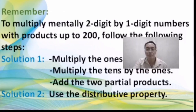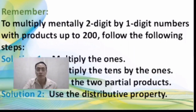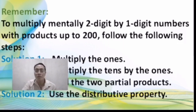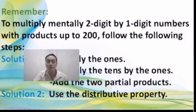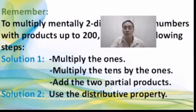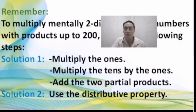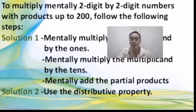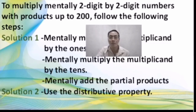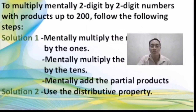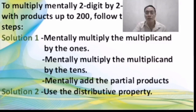Let us have a short recap. To multiply mentally 2-digit by 1-digit numbers with products up to 200: Solution 1 — multiply the ones, multiply the tens by the ones, then add the two partial products. Solution 2 — use the distributive property of multiplication. To multiply mentally 2-digit by 2-digit numbers with products up to 200: Solution 1 — mentally multiply the multiplicand by the ones, multiply the multiplicand by the tens, then mentally add the partial products. Solution 2 — use the distributive property.